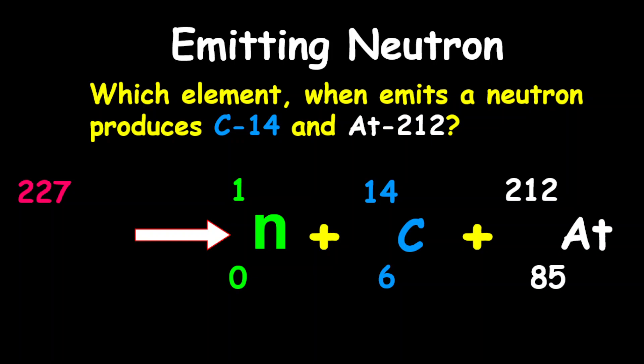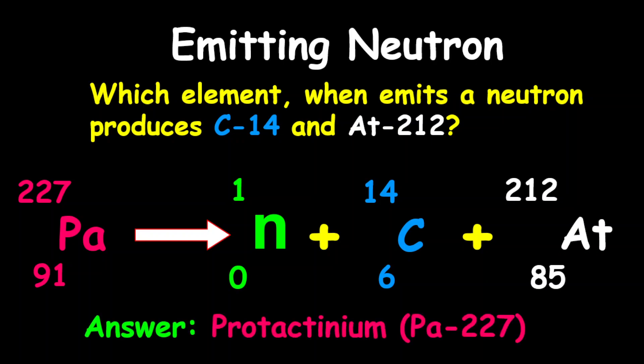what do we get there is 227. For the proton number, adding all the protons, what you're going to get there is 91. Therefore, the element is protactinium. So the answer is protactinium-227.